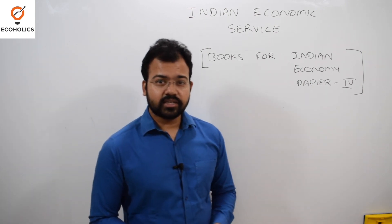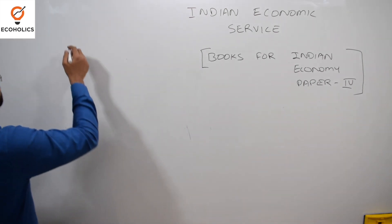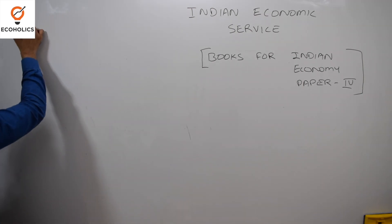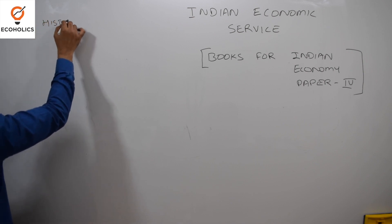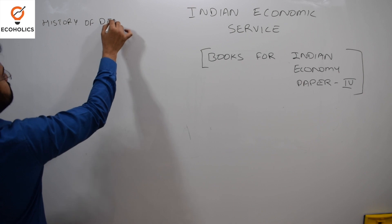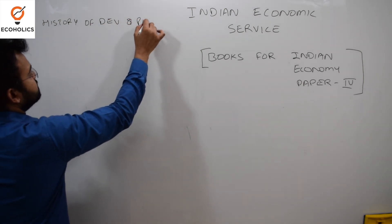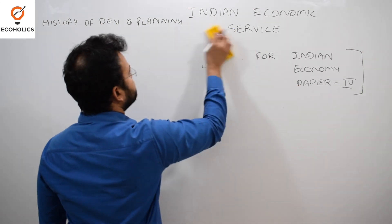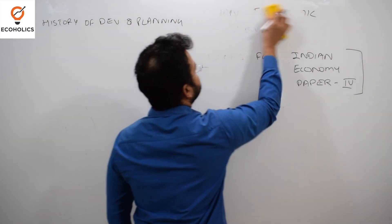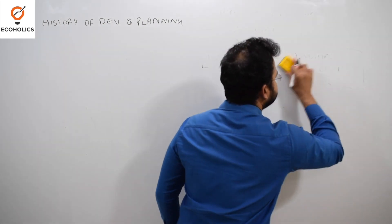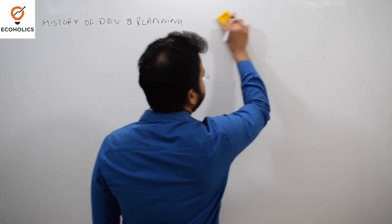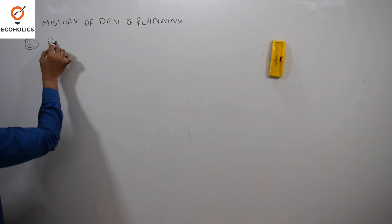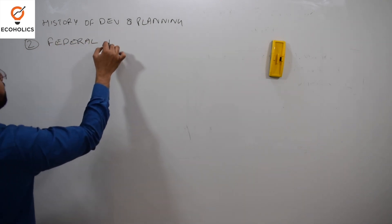There are 11 parts of this paper. The first heading under Paper 4 — Indian Economy — is the history of development and economic planning. The second is federal finance.